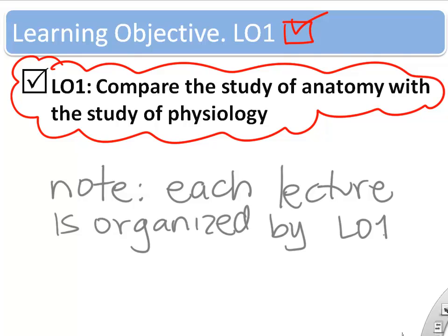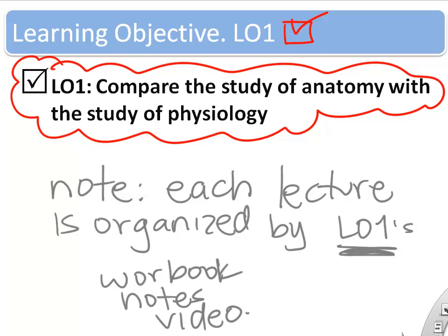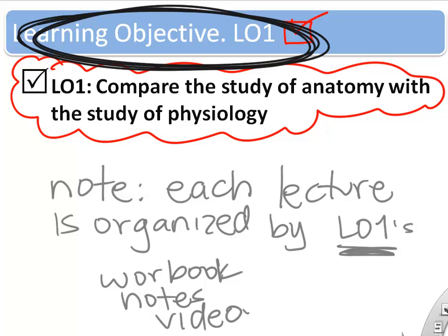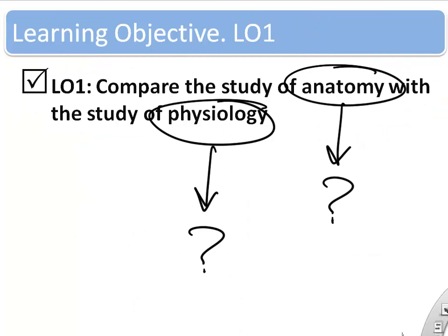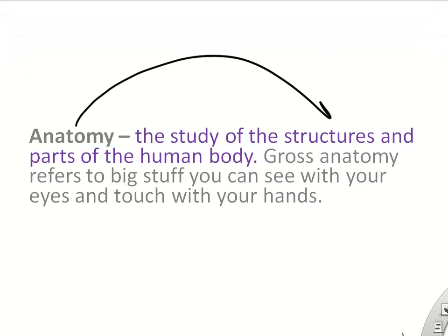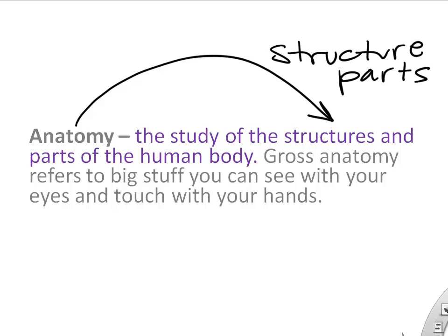Each lecture is organized by learning objectives, and the workbook, lecture notes, and video are all organized by learning objectives. So what's the difference between anatomy and physiology? Anatomy is pretty straightforward — it's the study of the structures and parts of the human body. Whenever you think of anatomy, just think about the parts.